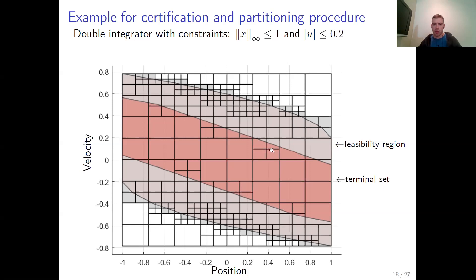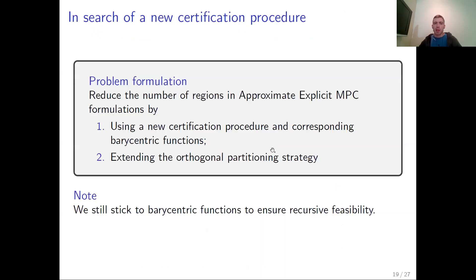We want to address this issue. In the search for a new certification procedure, we formulate the following problem: we want to reduce the number of regions in approximate explicit MPC to make it more computationally tractable, by providing a new certification procedure and corresponding barycentric functions. We also want to extend the orthogonal partitioning strategy to avoid unnecessary partitions, while sticking to barycentric functions to ensure recursive feasibility.